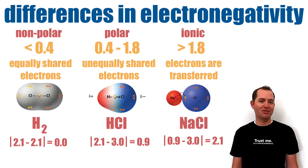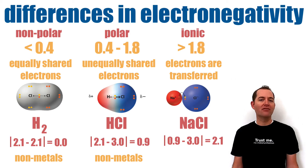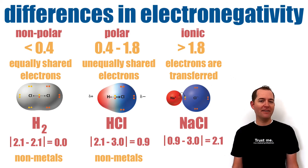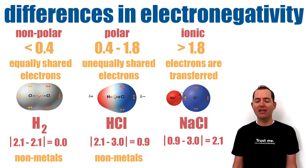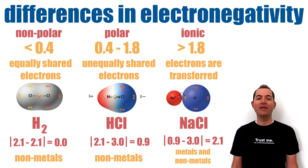These trends in electronegativity are generally accurate, but there are exceptions, so it is best to consider both the electronegativity difference and the types of elements involved in the bond. Covalent bonds are formed between non-metals, and electronegativity differences help determine if the bond is polar or nonpolar. Ionic compounds are formed between metals and non-metals.